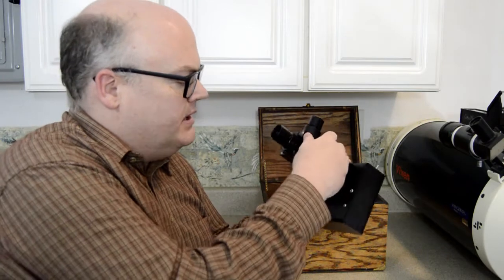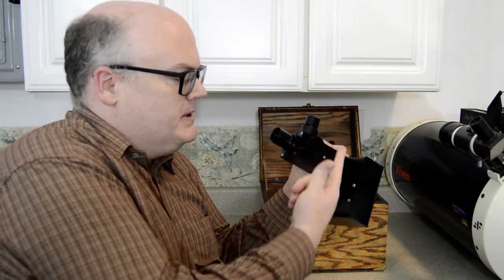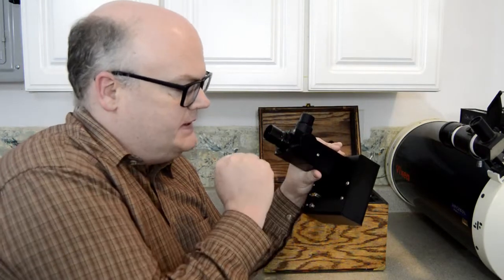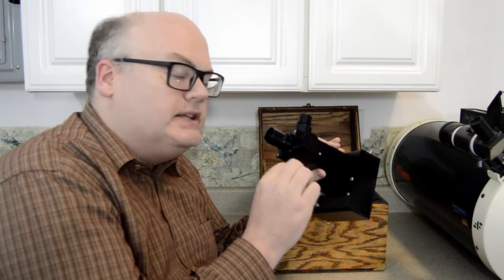And here on the other side we have this knob. And this just determines whether the light is going up through the eyepiece or back to the detector. Right now it's going to the eyepiece. And if you can look in there, you can see a little circle. And that's the reticle we use to center the star up. It needs to be centered.